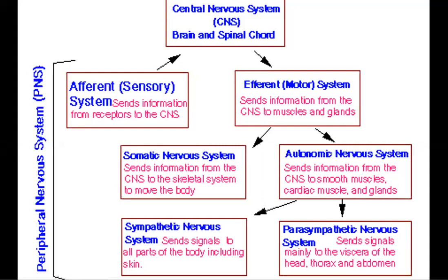In the central nervous system, we know that we have the brain and the spinal cord. The brain and the spinal cord are the parts of our central nervous system. Within this, we have the sensory system and the motor system — sensory means the sense organs and motor means movement.